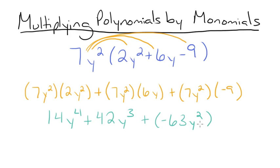Now remember what I said earlier, adding a negative number is the same thing as subtracting. So we can rewrite this as 14y to the 4th plus 42y cubed minus 63y squared. And that's our final answer.